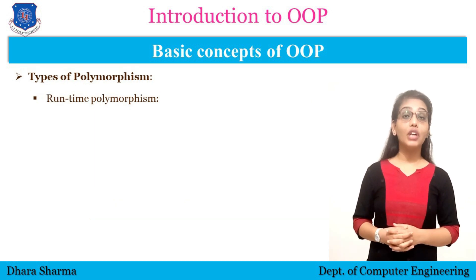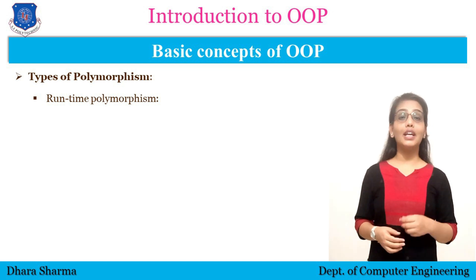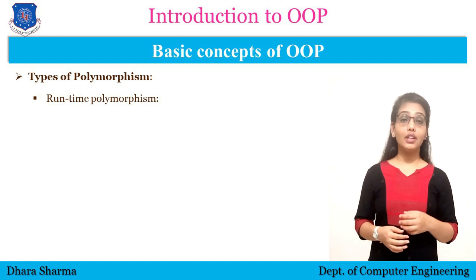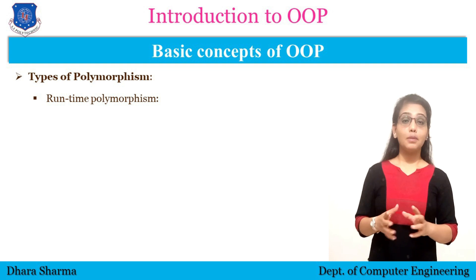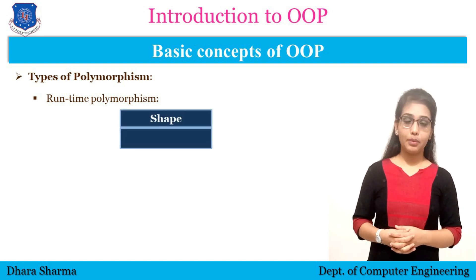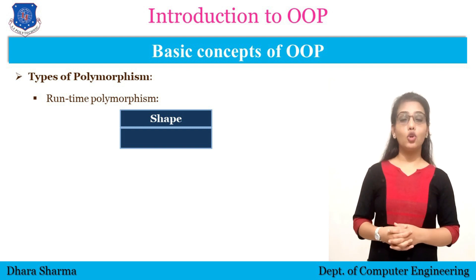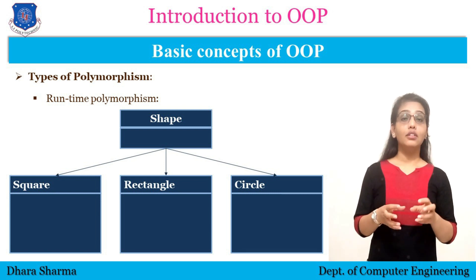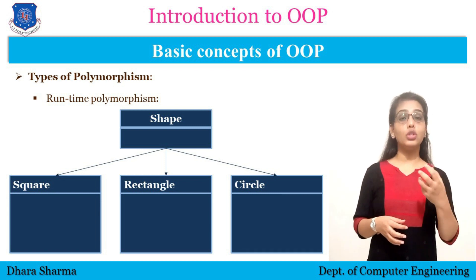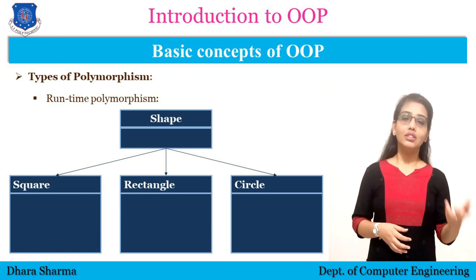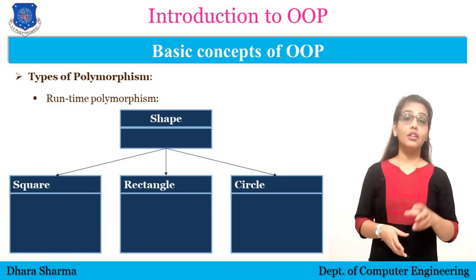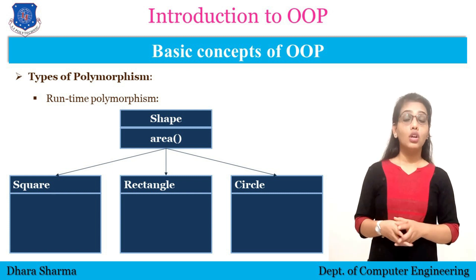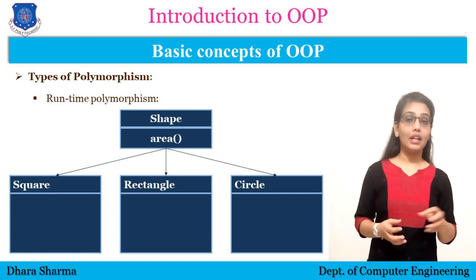Now let's understand run time polymorphism. Virtual function is a type of run time polymorphism. The concept of virtual function is always used with the concept of inheritance. Suppose there is a base class called Shape and there are derived classes called Square, Rectangle, and Circle. The properties are inherited from the Shape class to the Rectangle, Square, or Circle class.